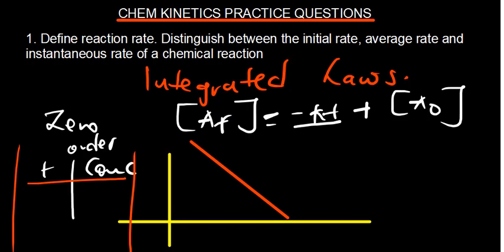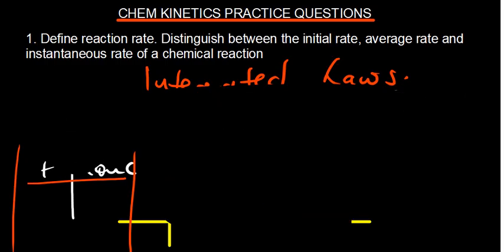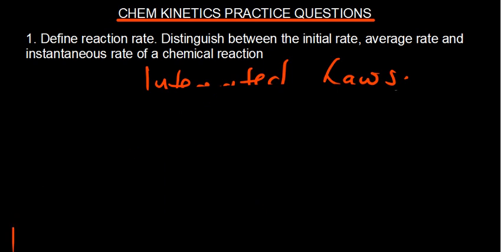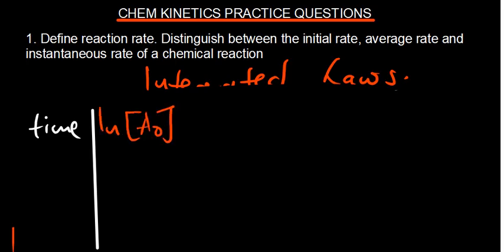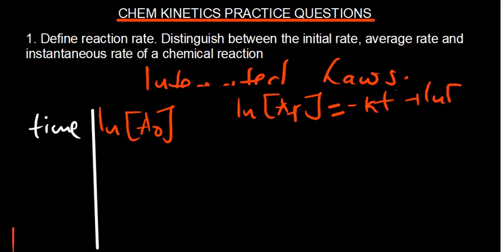For a first order reaction, the graph is plotted as the natural log of concentration against time. The gradient remains negative, so if you plot ln[concentration] versus time and get a straight line with negative slope, that confirms a first order reaction.